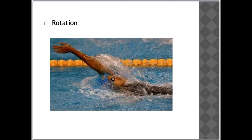Rotation is the circular movement of a bone around a joint, usually the hip or shoulder. An example is what happens when the arm rotates around the shoulder when swimming backstroke — as the backstroke swimmer brings their arm up out of the water, there is rotation occurring at the shoulder joint.